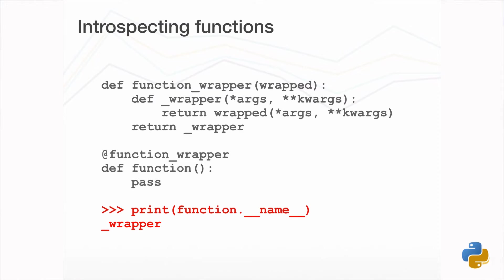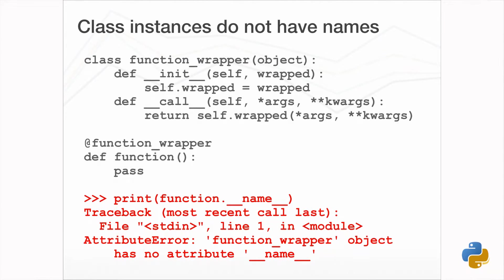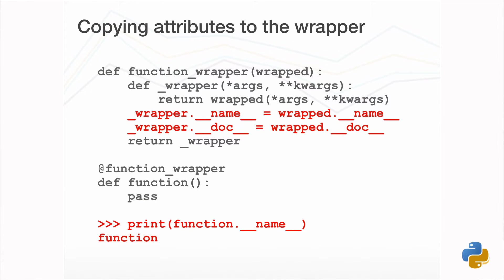When we talk about functions, we expect them to specify properties which describe them and document what they do. These include the __name__ and __doc__ attributes. When we use a wrapper though, this no longer works as expected — in the case of a function closure, the details of the nested function are returned. If we use a class to implement the wrapper, as class instances do not normally have a __name__ attribute, attempting to access the name of the function will result in an AttributeError. The solution when using a function closure is to copy the attributes of interest from the wrapped function to the nested wrapper function, which results in the function name and doc strings being correct.